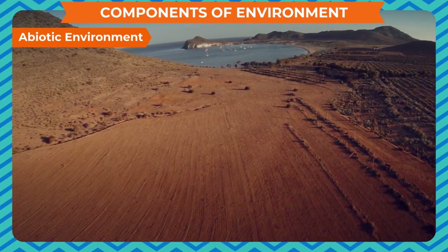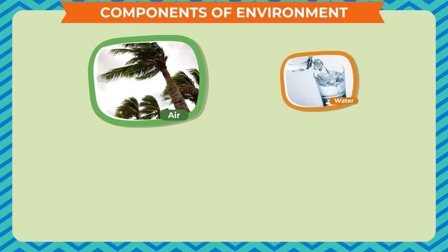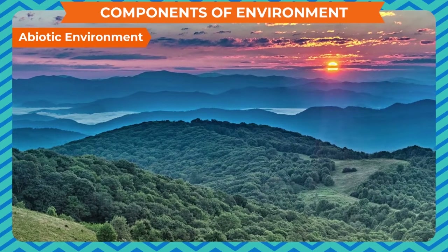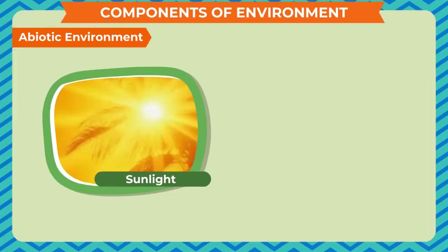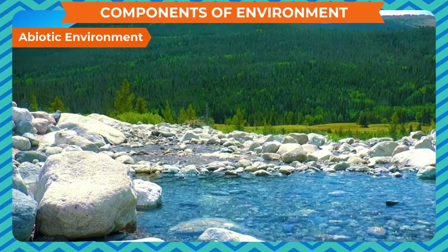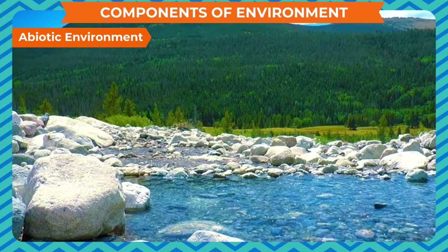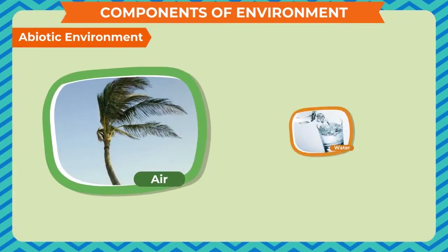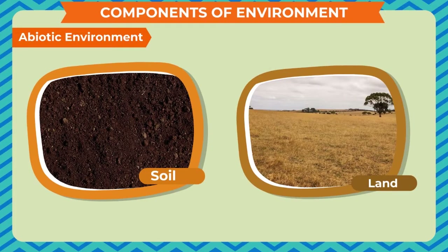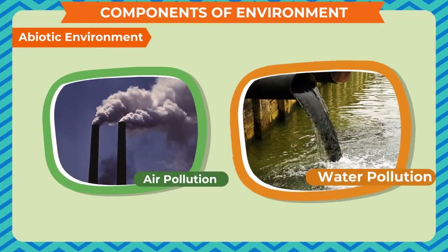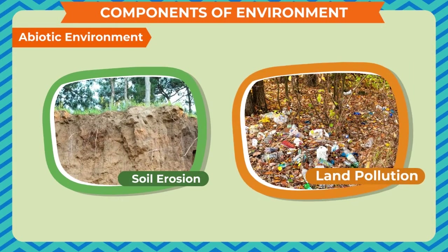Abiotic environment includes all non-living things. Air, water, rocks, land, etc. are the integral part of our abiotic environment. Climate factors such as sunlight, rainfall, storm, etc. are also considered as part of the abiotic environment. All biotic components are dependent on some abiotic components such as air, water, soil, and land for their needs.